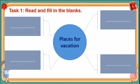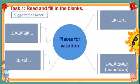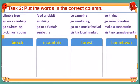Have you finished, students? OK, let's correct. Places for vacation: mountain, forest, beach, countryside. Now we move on to Task 2 — put the words in the correct column. There are 4 columns: beach, mountain, forest, and hometown.